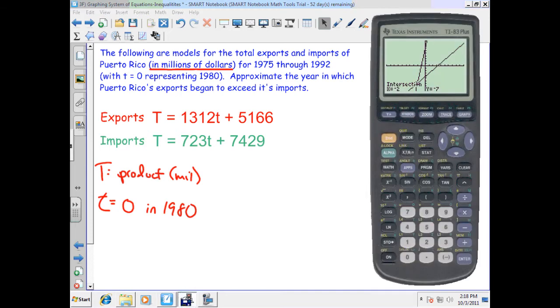The first thing I'm going to do is enter these into my calculator. So hit y equals. I'm going to type over these equations here. So I got 13,12t, my input I'm going to use is x, plus 5166. And then down here I have 723x plus 7429. So I have my two equations stored in there.